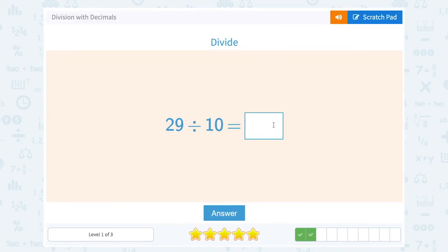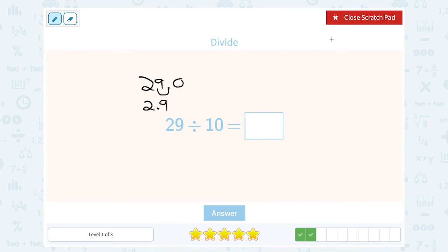29 divided by 10. Exact same thing since we're dividing by 10. Think of it as 29.0, and then we're making it one place value smaller. So I'm moving my decimal point to the left to give me 2.90 or just 2.9.